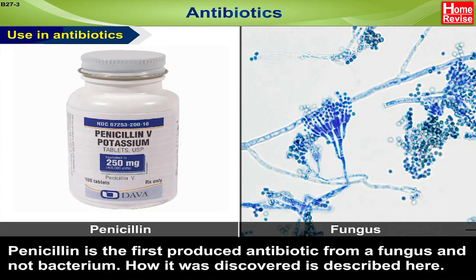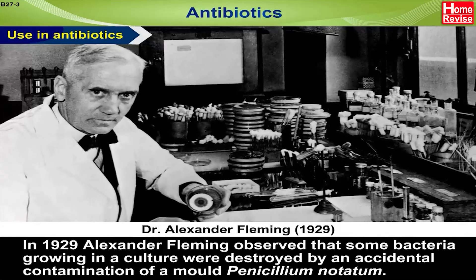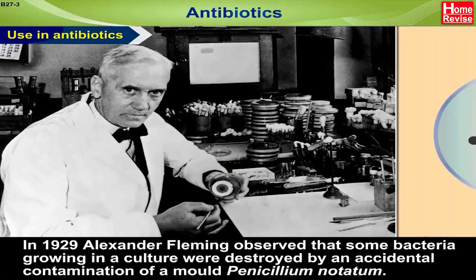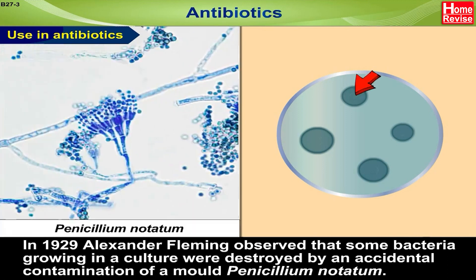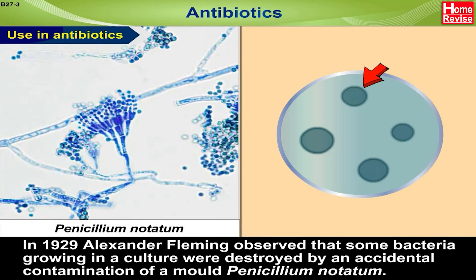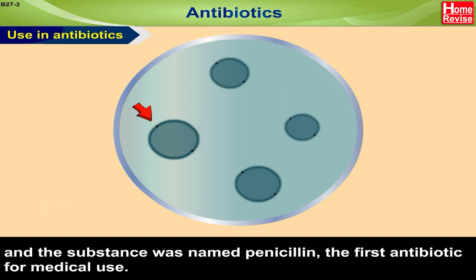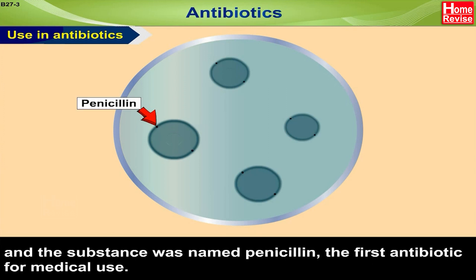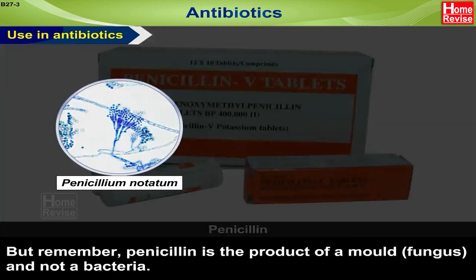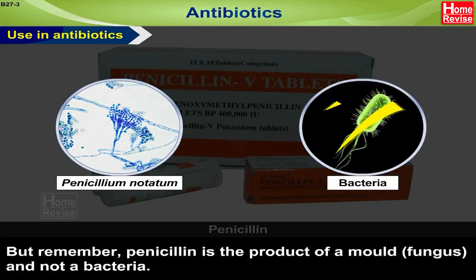How Penicillin was discovered: In 1929, Alexander Fleming observed that some bacteria growing in a culture were destroyed by an accidental contamination of a mold, Penicillium notatum. He discovered that this mold produced a substance which suppressed the growth of many bacteria. The substance was named Penicillin, the first antibiotic for medical use. Remember, Penicillin is the product of a mold — that is, a fungus — and not a bacteria.